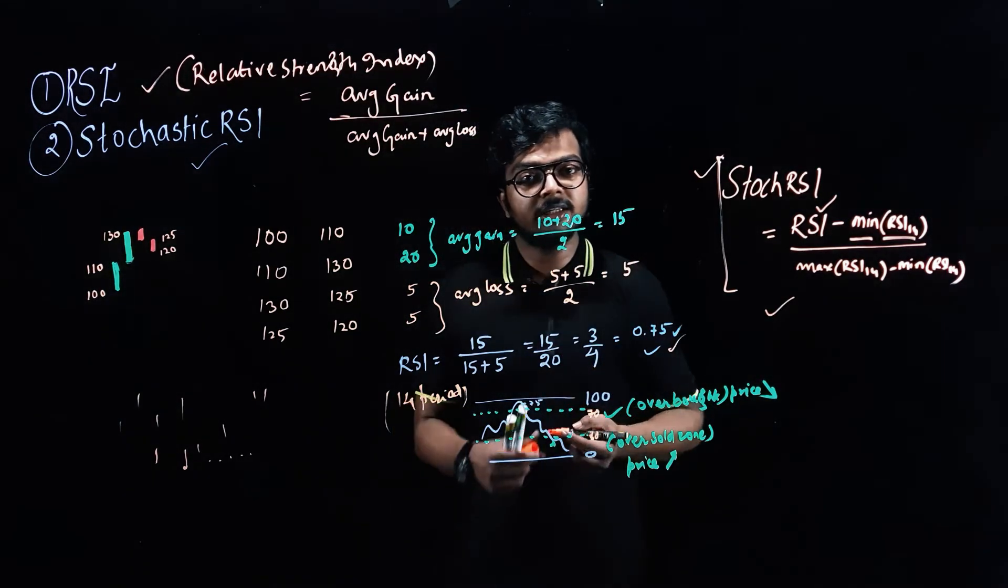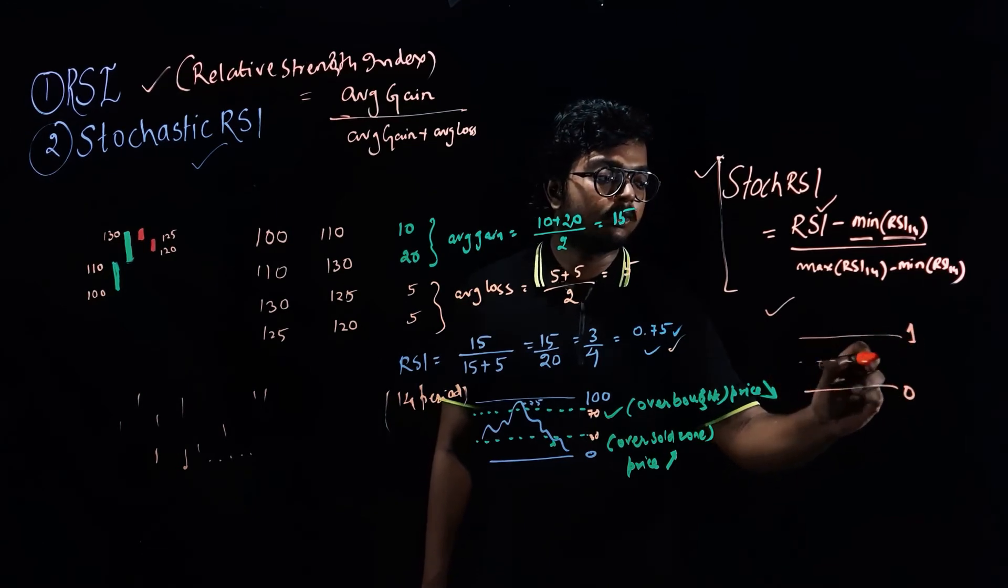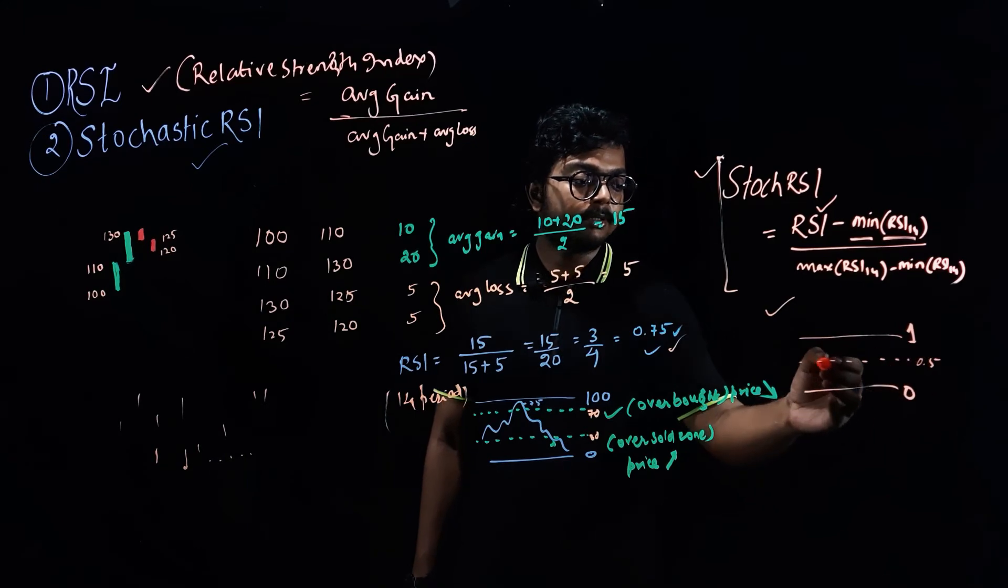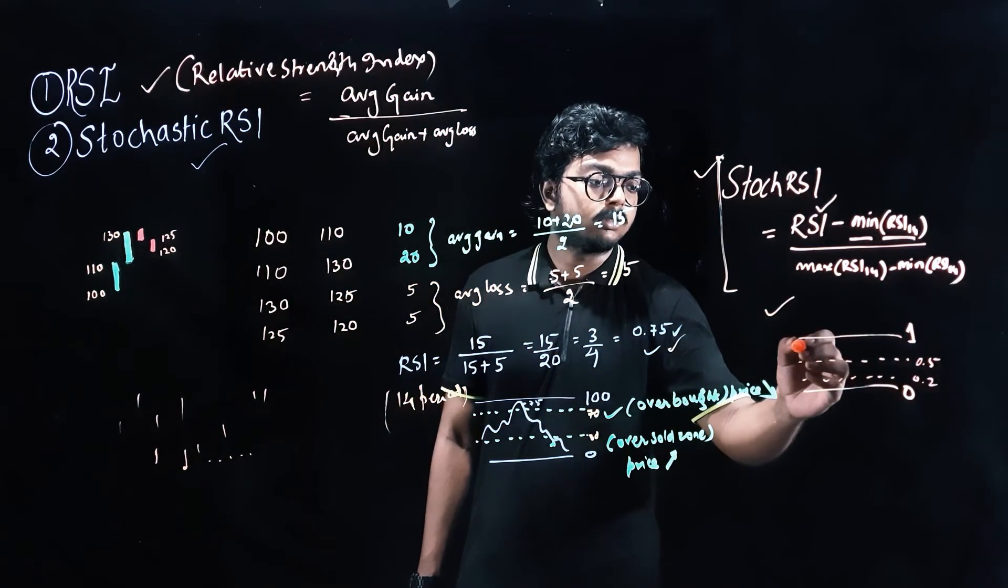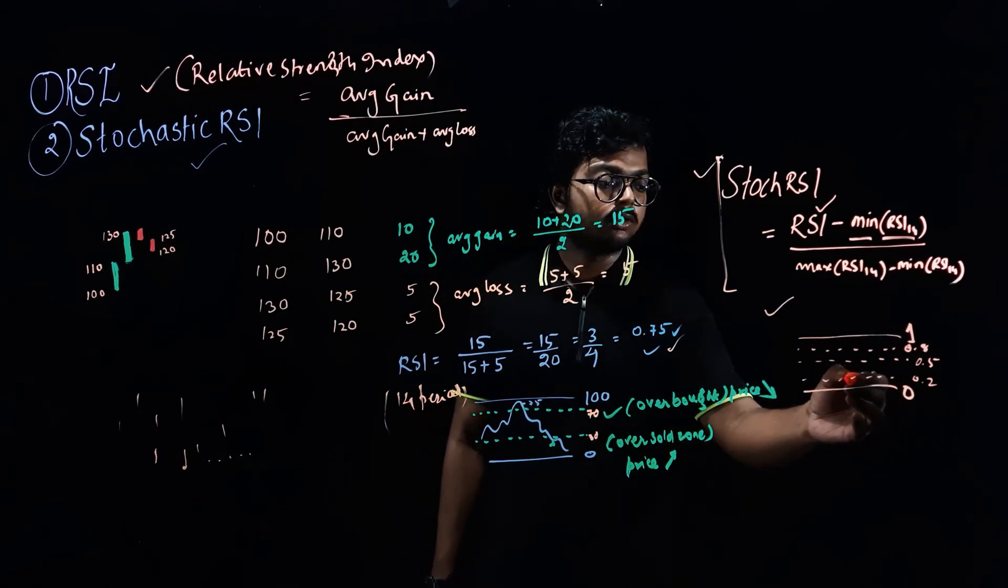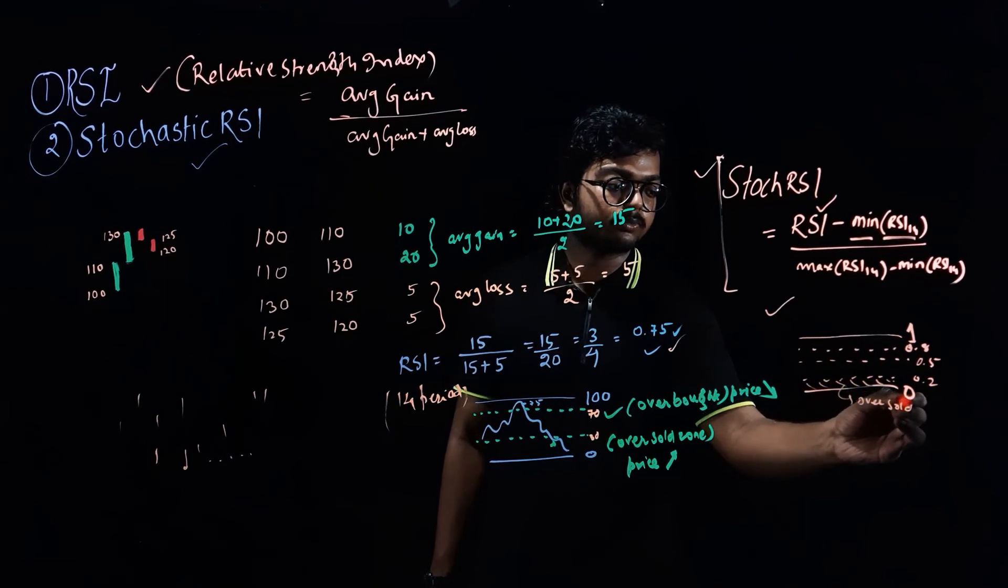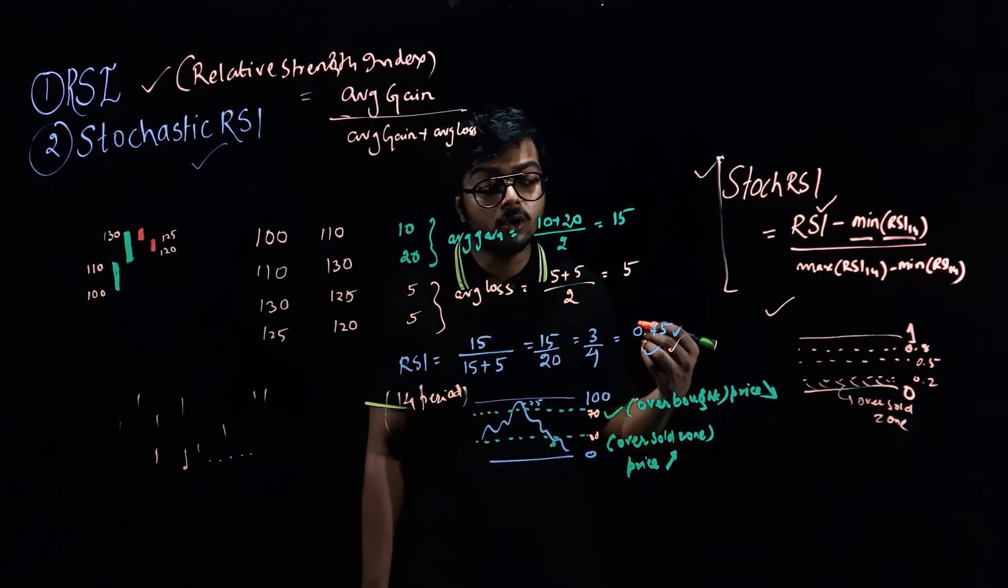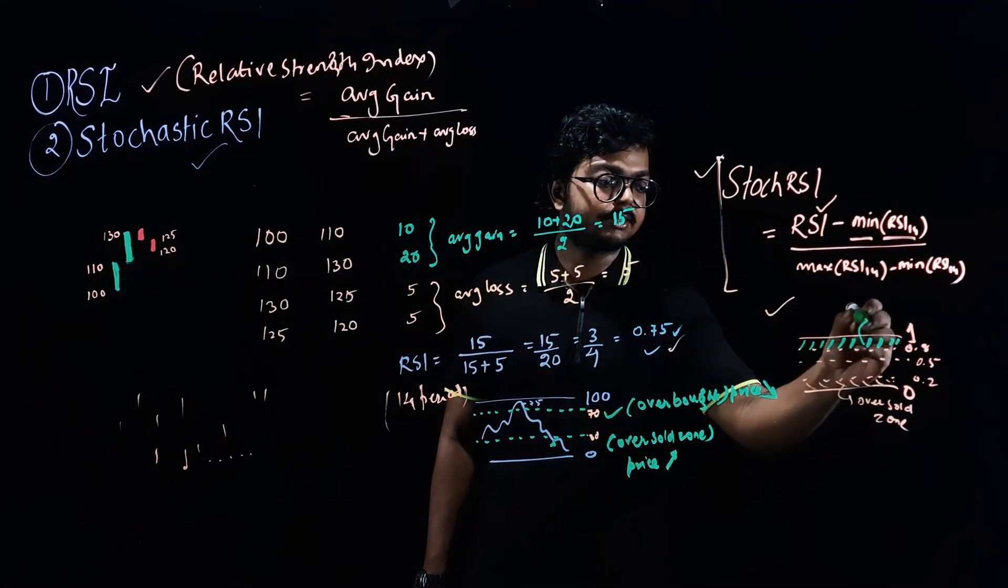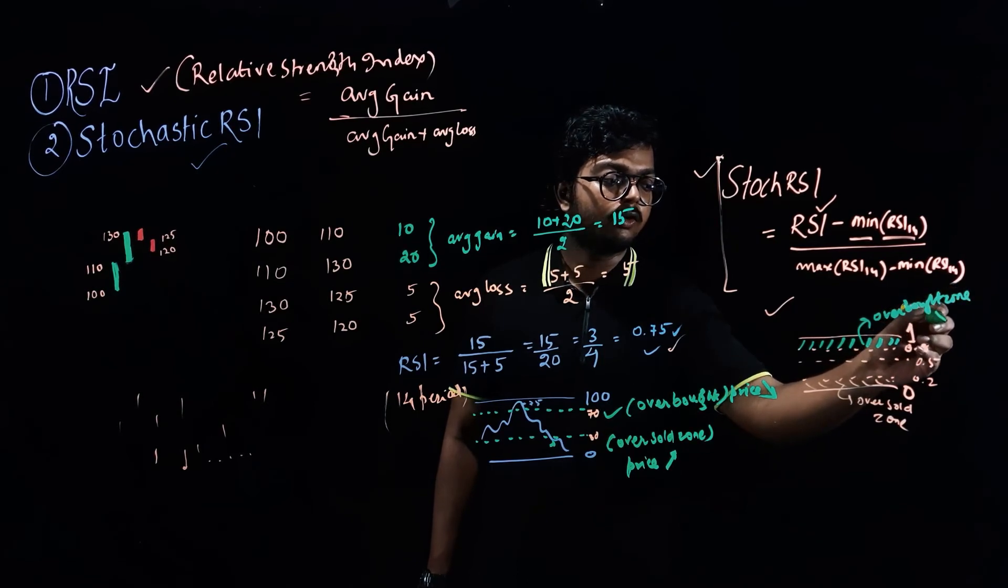Now how can you actually use it? The Stochastic RSI value generally lies between 0 and 1. So similar to RSI you can use it that if it is say below 0.2, then it indicates this zone indicates oversold zone and the price might reverse and price might go upwards. And this zone indicates overbought zone and the price might fall down from here.